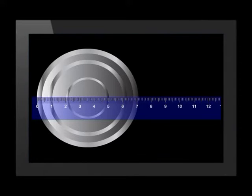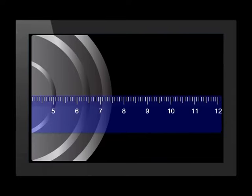Let's calculate the dimensions of the box. The calculations are quite simple. The diameter of the tin is measured, and measuring the diameter of the tin, we get 75 mm.